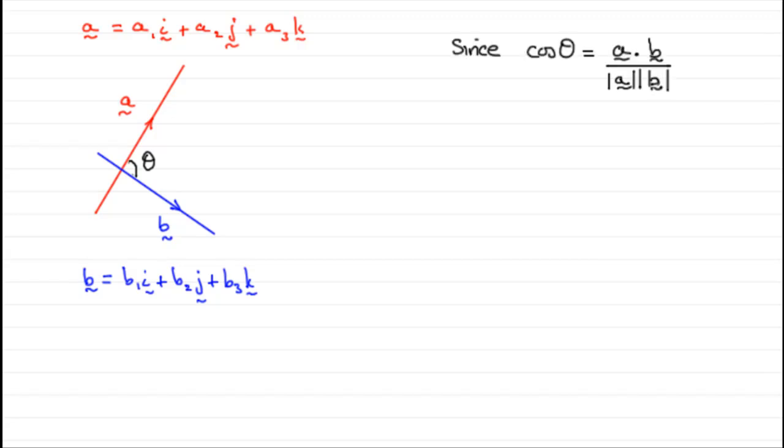We should know from the scalar product that cos theta equals A dot B all divided by the magnitude of A times the magnitude of B. And if I was to multiply both sides of this equation by the magnitude of A, magnitude of B.